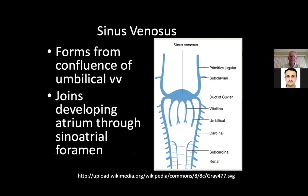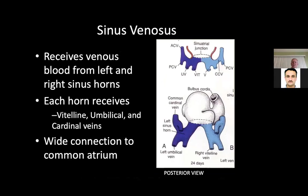The sinus venosus has to form the primitive jugular and the subclavian coming off of it. The vitelline and umbilical vessels help to form this, but these major veins of the sinus venosus have to come down and pick up all the umbilical, cardinal, subcardinal, and renal veins, with the subclavian and jugular coming off the top.